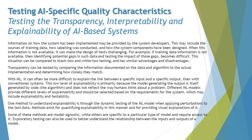Information on how the system has been implemented may be provided by the system developers. This may include the sources of training data, how labeling was conducted, and how the system components have been designed. When this information is not available, it can make the design of tests very challenging. Having an understanding of how the system was implemented — the control flow, workflow, interactions, interfaces, and training data — is very important.